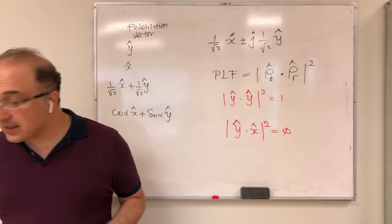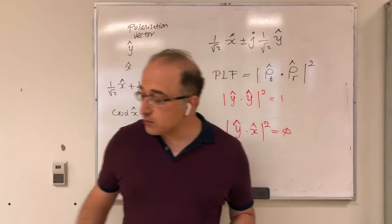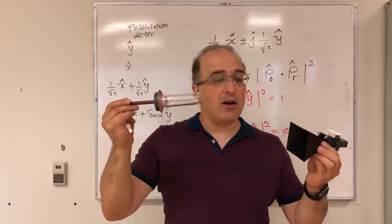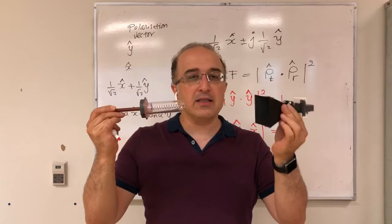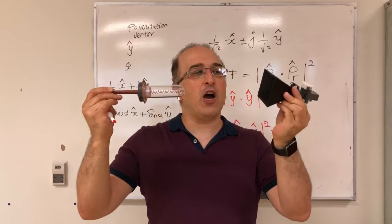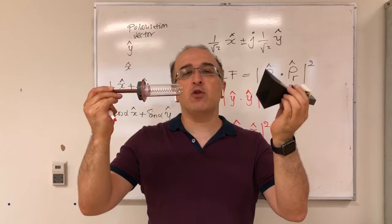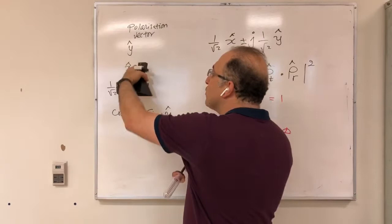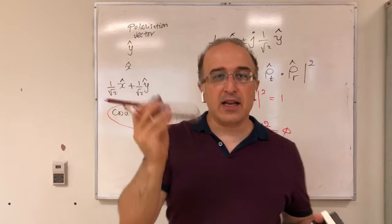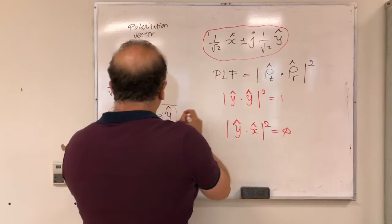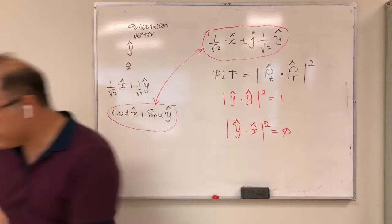So that's the problem with a linearly polarized antenna. Now let's change the problem: use a helical (circularly polarized) antenna on one side and a linearly polarized antenna on the other. In general, let's assume I'm rotating the linearly polarized antenna by angle alpha, so its polarization is the general form cos(alpha) x-hat + sin(alpha) y-hat. I'm going to use these two to find the polarization loss factor.